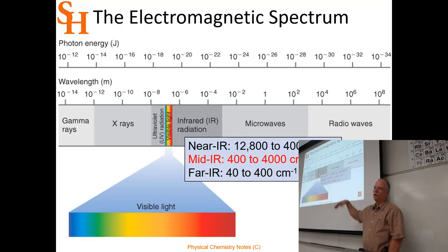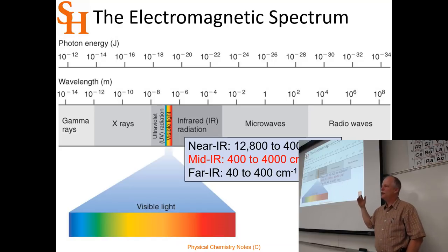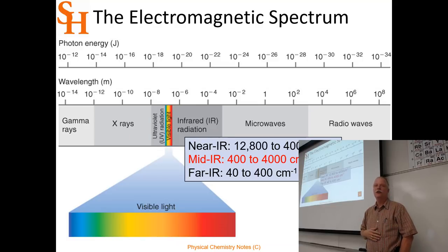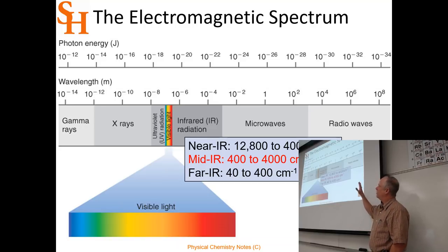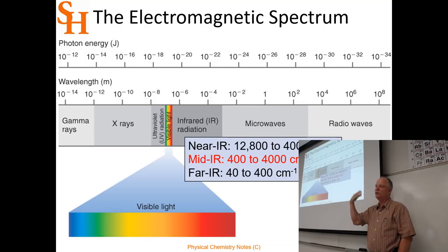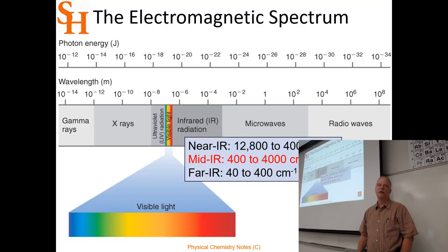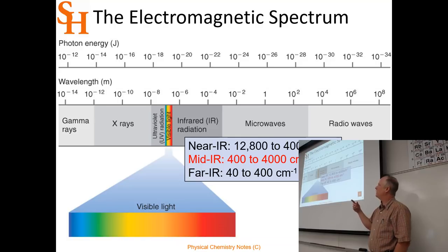Moving over to microwaves and the terahertz range — that's what the terahertz scanner at the airport uses, at 10¹² Hz. Microwaves, like in your microwave oven, are tuned to the rotational energy levels in water, so they heat the water in your food. Then we get to the infrared region, which we'll be studying next week. There are three ranges: near-infrared, which is near the visible range and thus higher frequency.